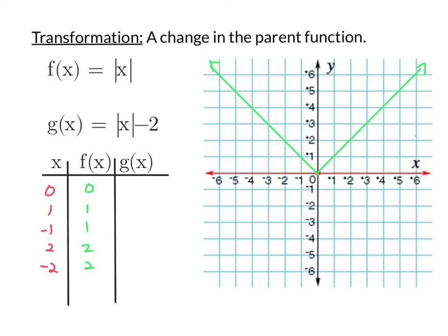Now that we know about the parent functions, let's take a look at how we can use transformations to get all of the other graphs of the family of functions. When we're talking about transformation, it is any change to the parent function. In green here, I've got a graph of the parent function f of x equals the absolute value of x.